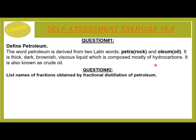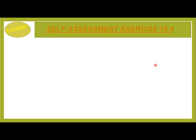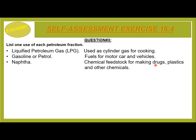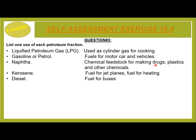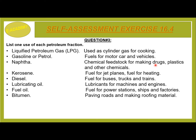Question No. 2: List names of fractions obtained by fractional distillation of petroleum: LPG, gasoline or petrol, naphtha, kerosene, diesel, lubricating oil, fuel oil, and bitumen. Question No. 3: Uses — LPG: cylinder gas for cooking; gasoline/petrol: fuel for motorcars and vehicles; naphtha: chemical feedstock for drugs, plastics and other chemicals; kerosene: fuel for jet planes and heating; diesel: fuel for buses, trucks and trains; lubricating oil: lubricants for machines and engines; fuel oil: fuel for power stations, ships and factories; bitumen: paving roads and making roofing material.